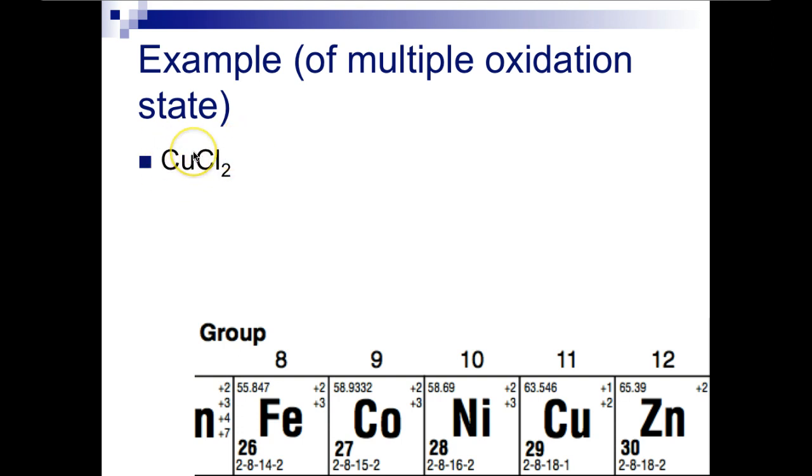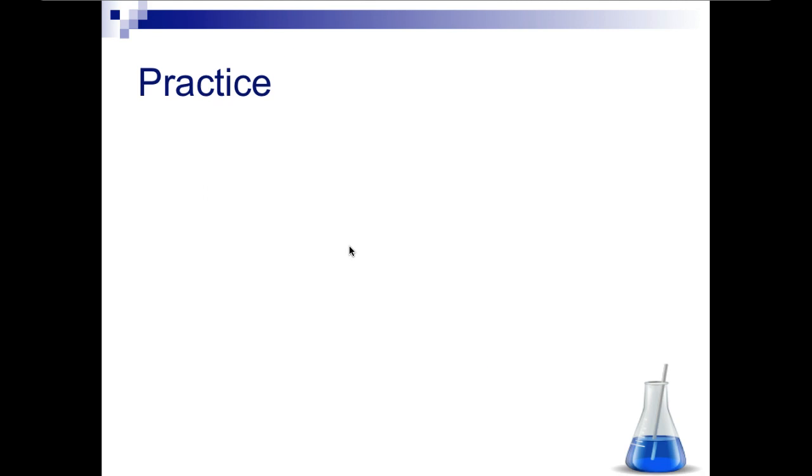This is going to have an oxidation state of plus 2, so when we write our formula, it'll be copper(II) because when we un-criss-cross, this 2 ends up being the charge of the copper, and then 'chlor,' which is the first syllable for chlorine, and then '-ide' at the end. So CuCl2 is the formula for copper(II) chloride.